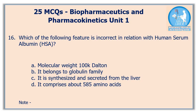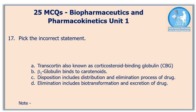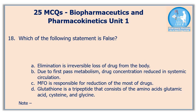Question sixteen: which of the following features is incorrect in relation to human serum albumin? The correct answer is option A. Question seventeen: pick the incorrect statement — the correct answer is option B. Regarding globulins: beta-1 globulin binds to ferrous ions, whereas beta-2 globulin binds to carotenoids. Question number eighteen: which of the following statements is false? The correct answer is option C.